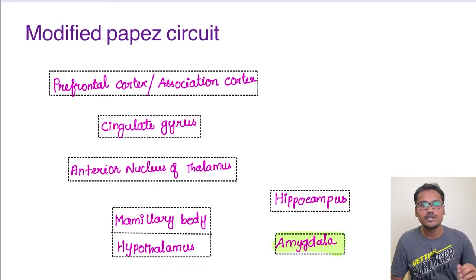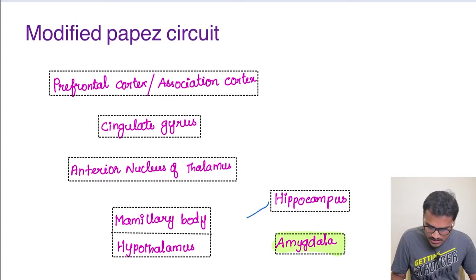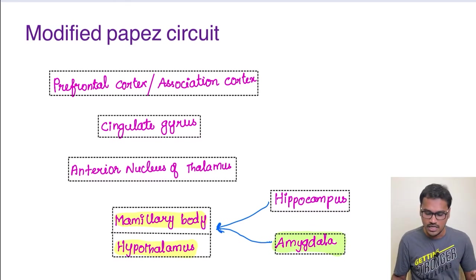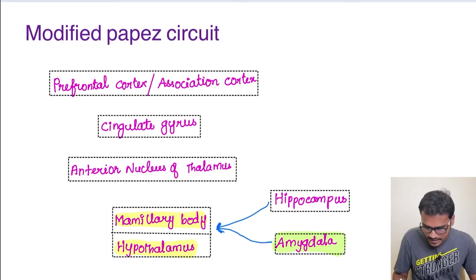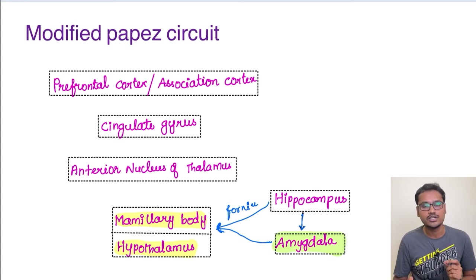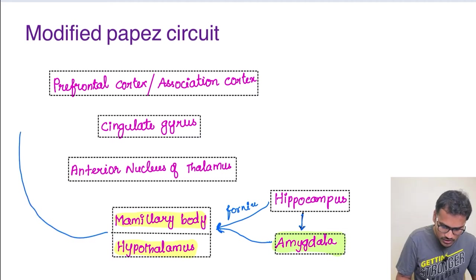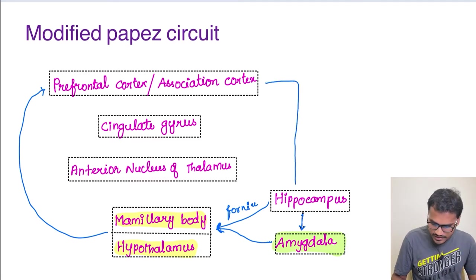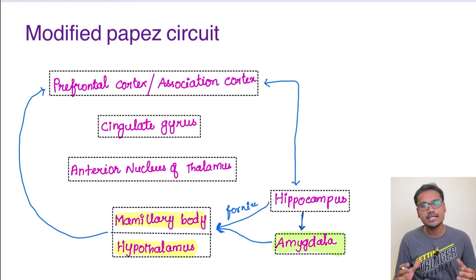Let us now see the connections. Starting from here, the hippocampus as well as the amygdala give stimuli to the mammillary body of the hypothalamus. Both of them send impulses to this structure. Not only that, the hippocampus also directly communicates with the amygdala — so there is one more communication happening here. The hippocampus reaches the mammillary body through the fornix. From the hippocampus, impulses also go directly to the prefrontal cortex, and from the prefrontal cortex, they go back to the hippocampus — this is a to-and-fro connection, connected in both ways.